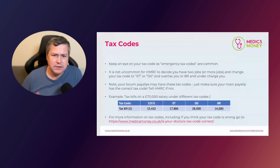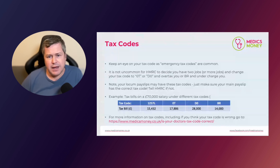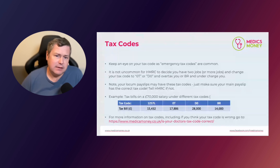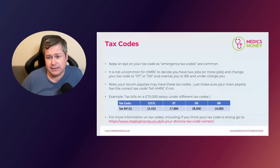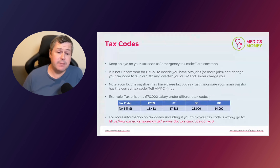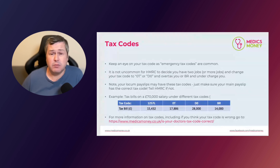HMRC often applies these codes if they know you have more than one job, and that can make sense. For example, if you work in England with a main job salary of £55,000, it would make sense for a D0 tax code to be applied to any locum work at another trust, as that would correctly tax that additional income at 40%. A big problem often arises, though, when doctors move from one trust to another on changeover day in August.